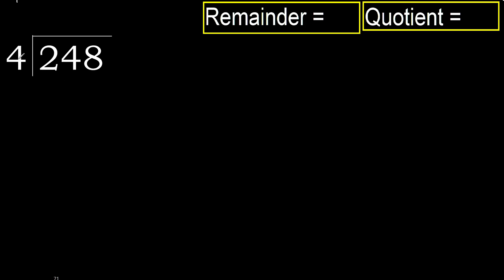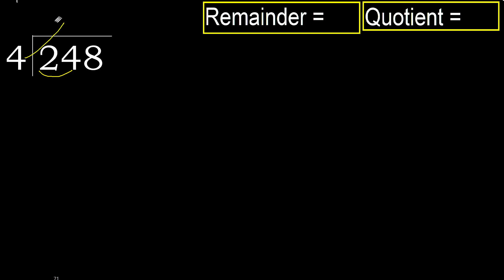248 divided by 4. 2 is less, therefore next. 24 — 4 is not less. Therefore, with 24: which number multiplied by 4 is nearest to 24 but not greater?